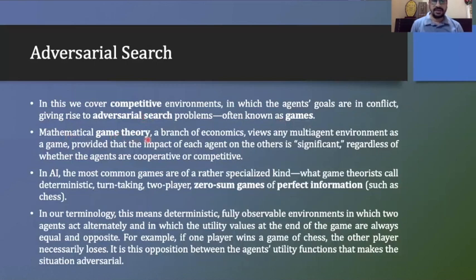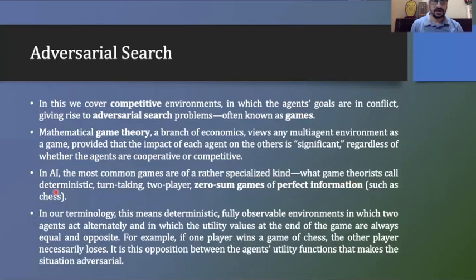Mathematical game theory, a branch of economics, views any multi-agent environment as a game, provided that the impact of each agent on the other is significant, regardless of whether the agents are cooperative or competitive. So adversarial search is based on game theory and both agents will play against each other. In AI, the most common games are of a specialized kind — what game theorists call deterministic, turn-taking, two-player.